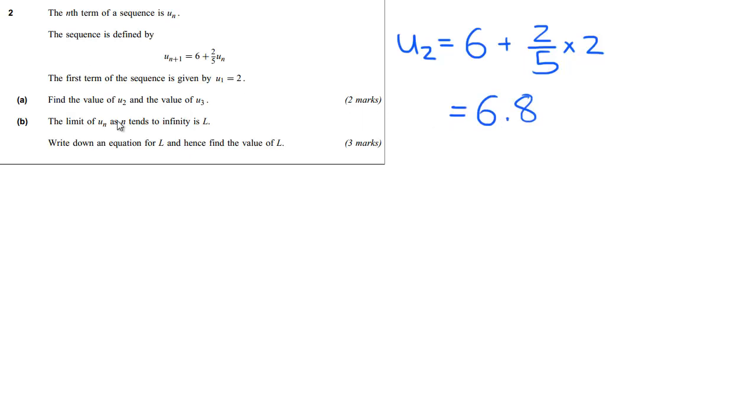And then let's have another color and do U3. So U3 again, we're just going to take what we've got for U2 and put it into this part here. So we'll do exactly the same thing again: 6 plus 2 fifths times by 6.8. And that is equal to 8.72 if I'm not mistaken.